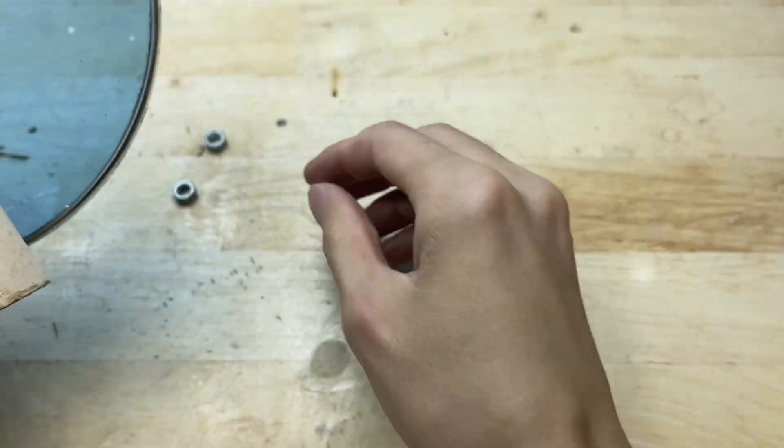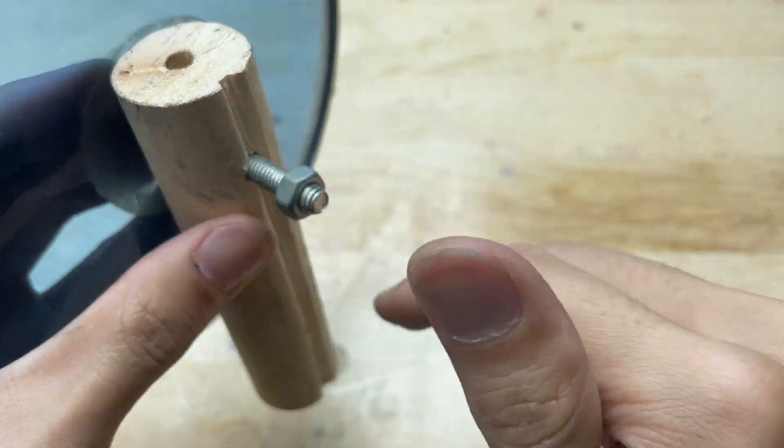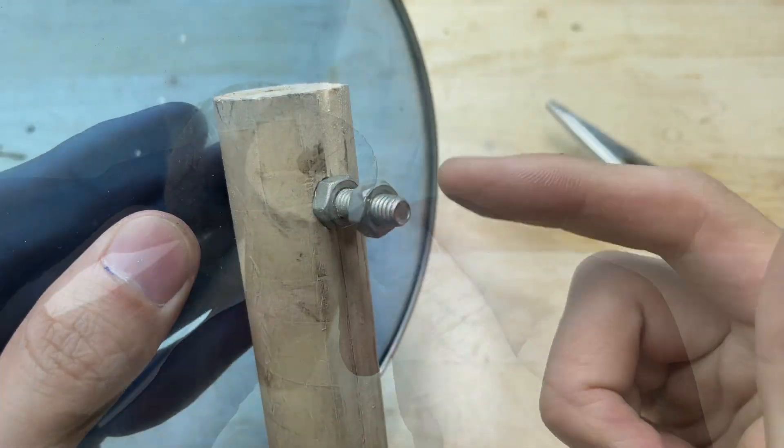After that, screw on a nut and tighten it to secure the lid and handle firmly together. This way, your handle will be sturdy and ready to use.